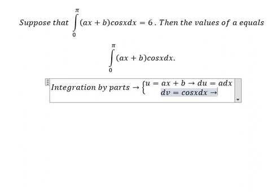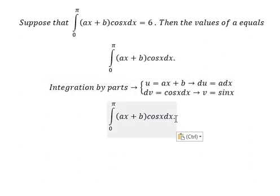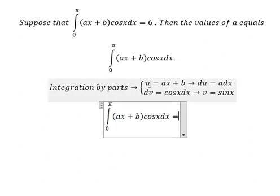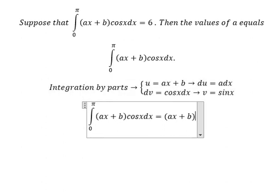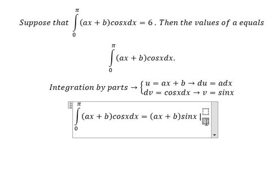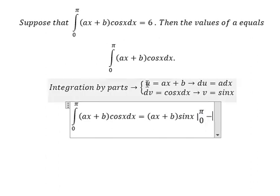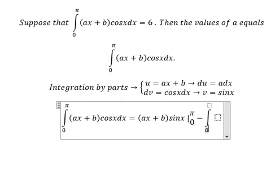Next, we have u multiplied by v, that's (ax+b) multiplied by sinx with bounds from 0 to π. Then we have negative the integral from 0 to π of du multiplied by v, so that's the integral from 0 to π of a sinxdx.